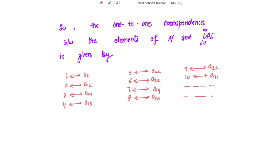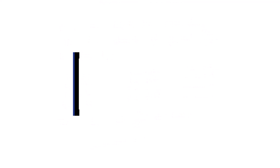Whenever there is a 1-to-1 correspondence between the natural numbers and the elements of any set, that set is a countable set. Here there is a 1-to-1 correspondence between the natural numbers and the union of the countable sets. Therefore, the union of countable sets is countable. Thus, the set union of A_i for i going from 1 to infinity is countable.